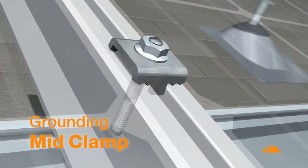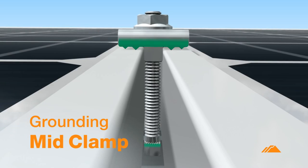The grounding mid-clamp uses teeth on both top and bottom to bond solar modules and rails into one continuous system.